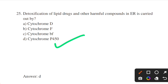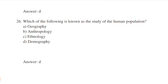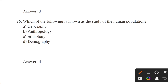Which of the following is known as the study of human population? Options: geography, anthropology, anthology, demography. Answer: option D — demography. Demography is the study of statistics such as birth, death, income, or the incidence of disease that illustrate the changing structure of the human population.